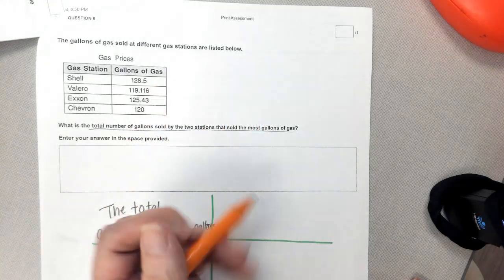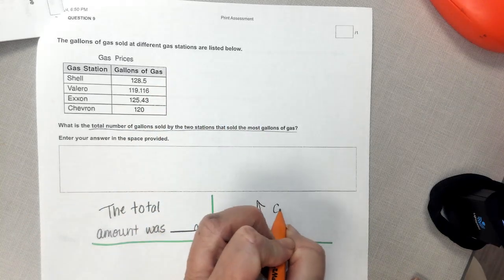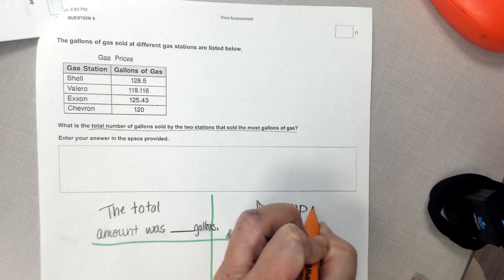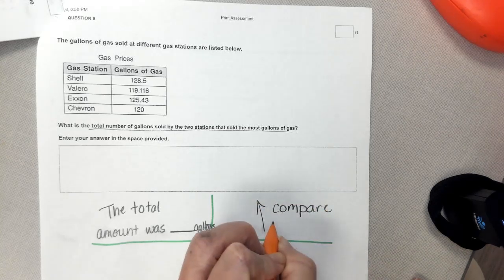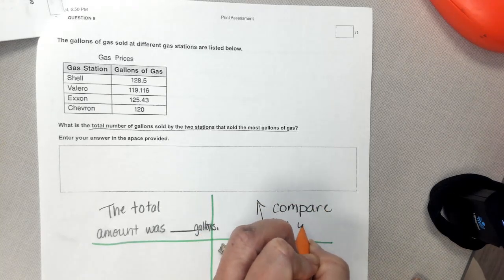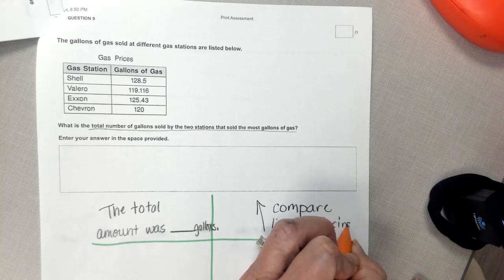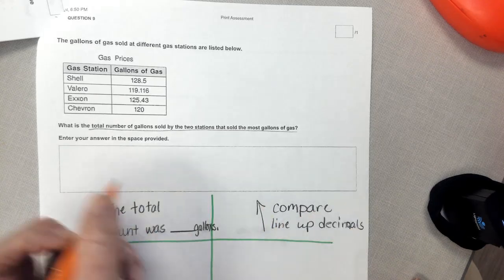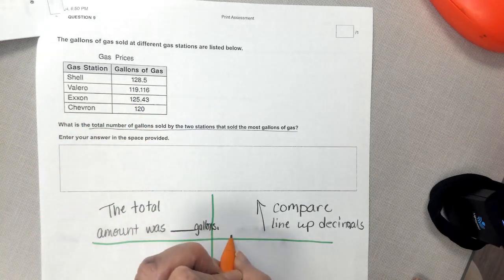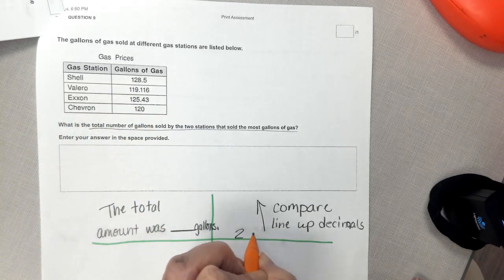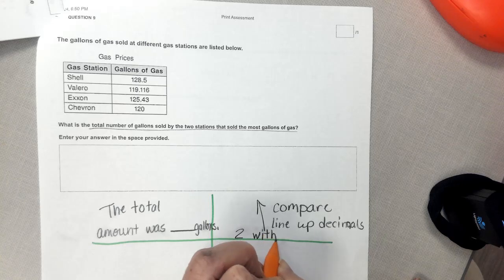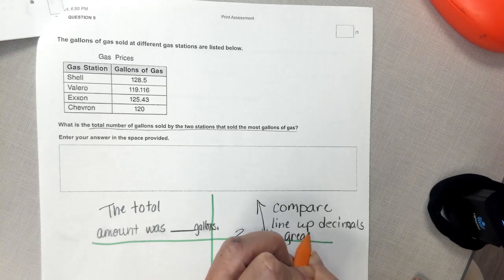Then I'm going to need to go back up here, and I'm going to draw an arrow. What I need to do is I need to compare. So I need to line up some decimals, and I need to compare one digit at a time, and I need to find the two with the greatest amount sold.